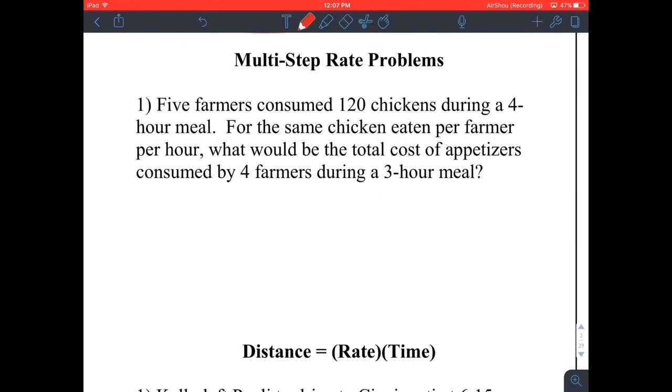Multi-step rate problems. Five farmers consumed 120 chickens during a four-hour meal. For the same chicken eating per farmer per hour, what would be the total consumed by four farmers during a three-hour meal? We have to determine if this is a direct or indirect relationship. It's direct because the more time you have to eat, the more chickens you'll be able to eat, so those are moving in the same direction.